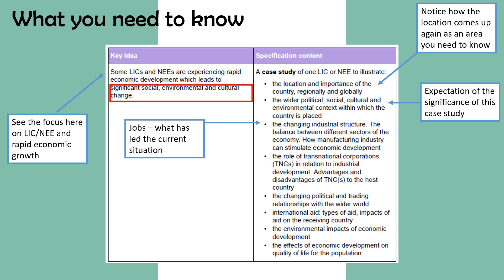Regarding industrial structure, we do really well with the UK and you're on board with it, but you can't forget about it for Nigeria as well. We want to talk about the different sectors — the jobs — and what has led to the current situation Nigeria is in. It's really important to understand how the economy grew so quickly and what the problems and implications are for that continued growth.